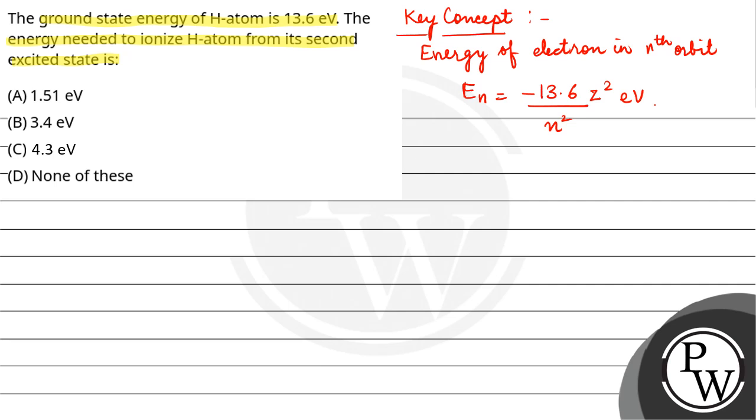Now, if we talk about n equals 1, that's the ground level, where energy is 13.6 electron volt. This is n equals 2, your first excited state. This is n equals 3, the second excited state.